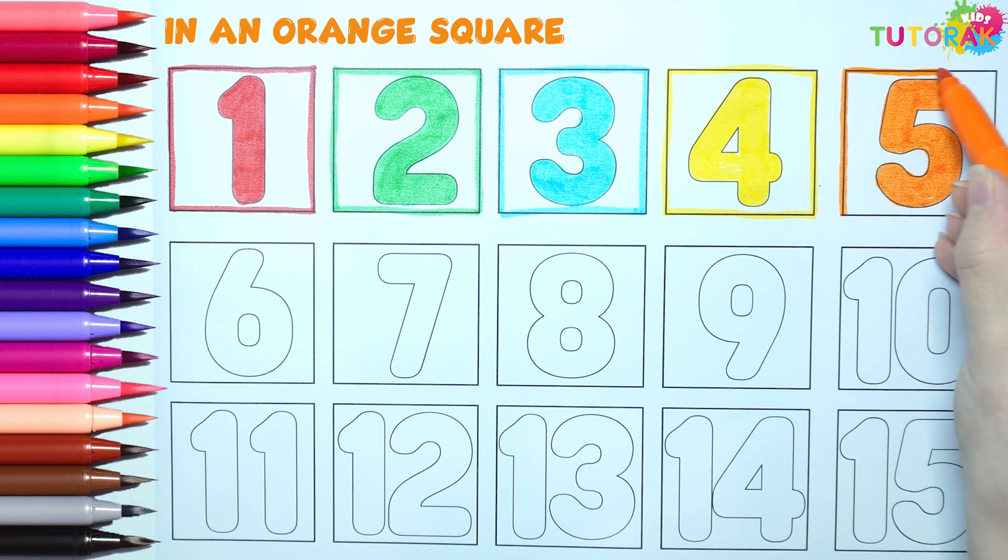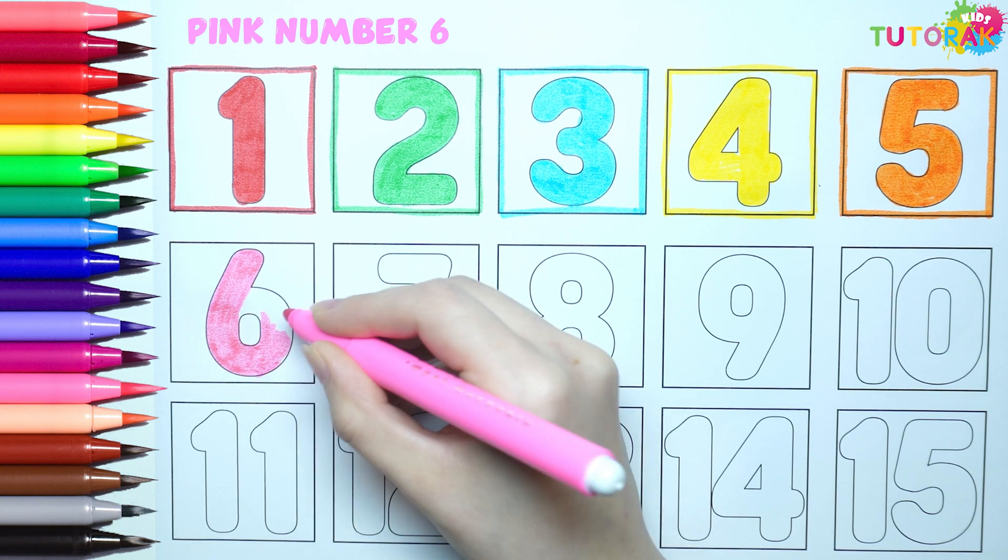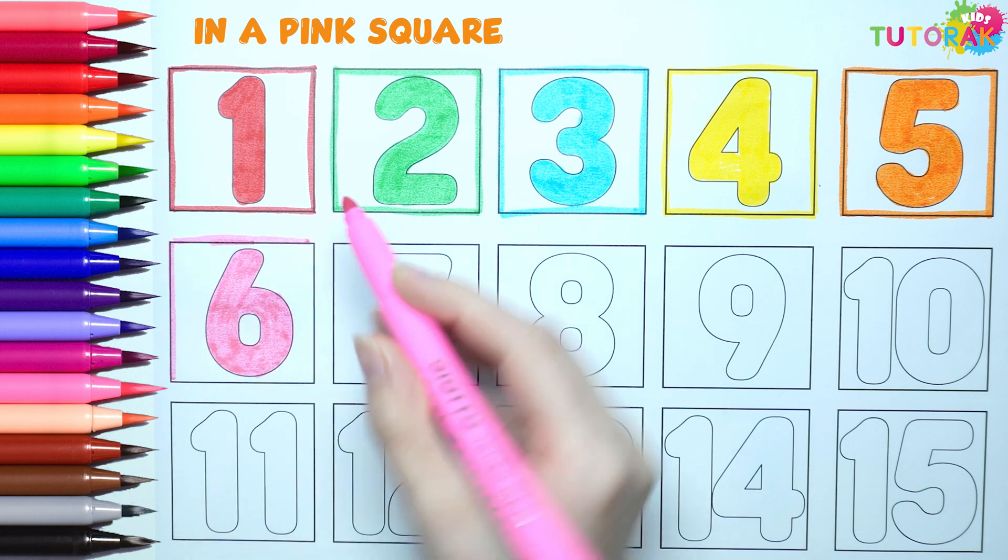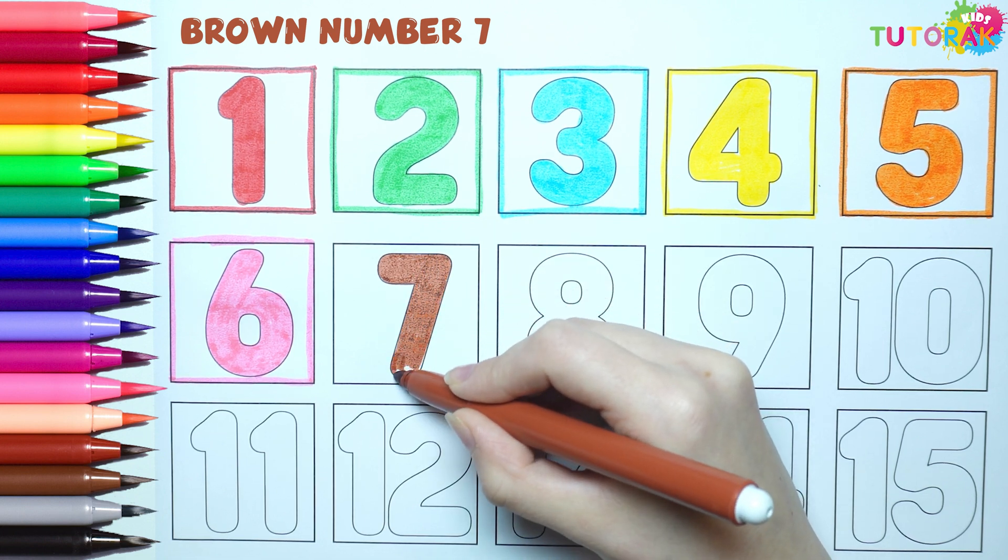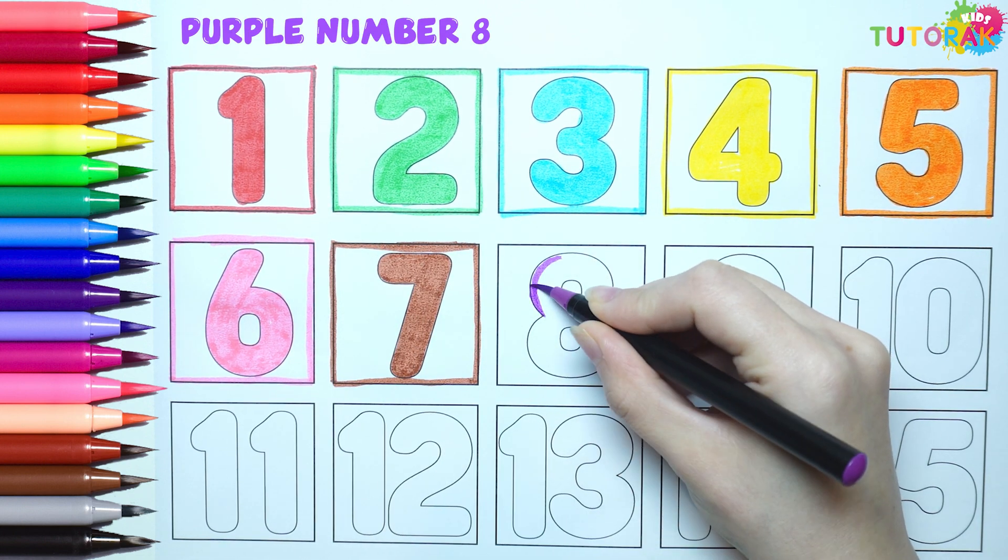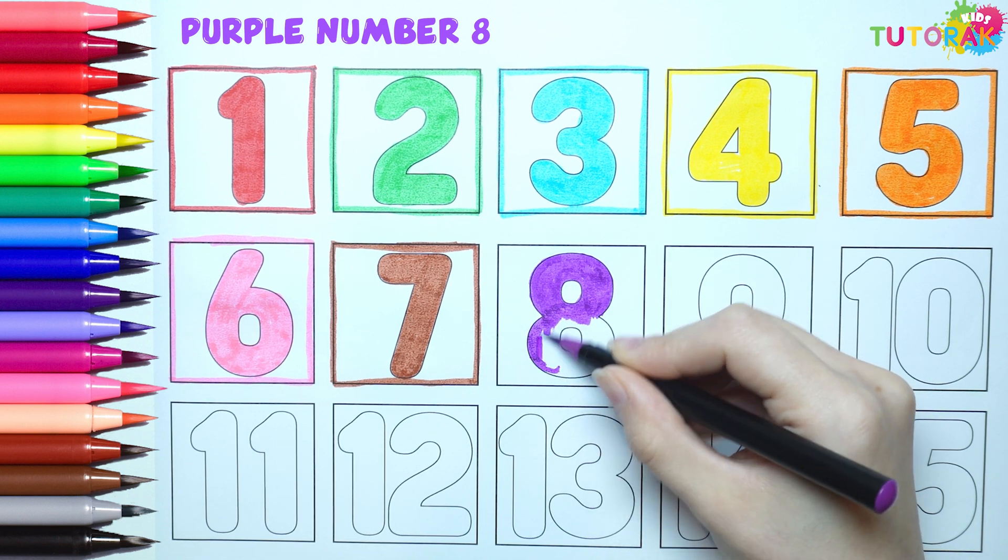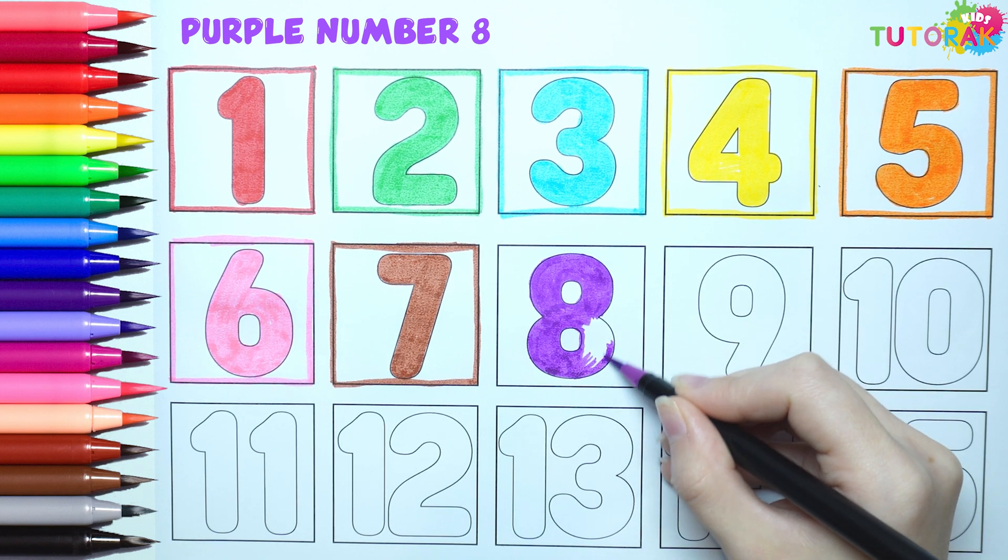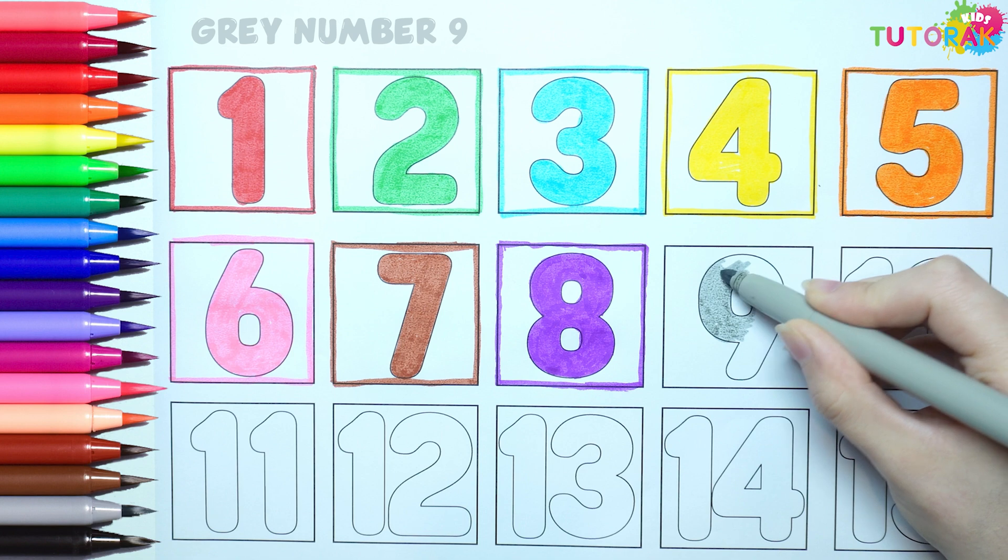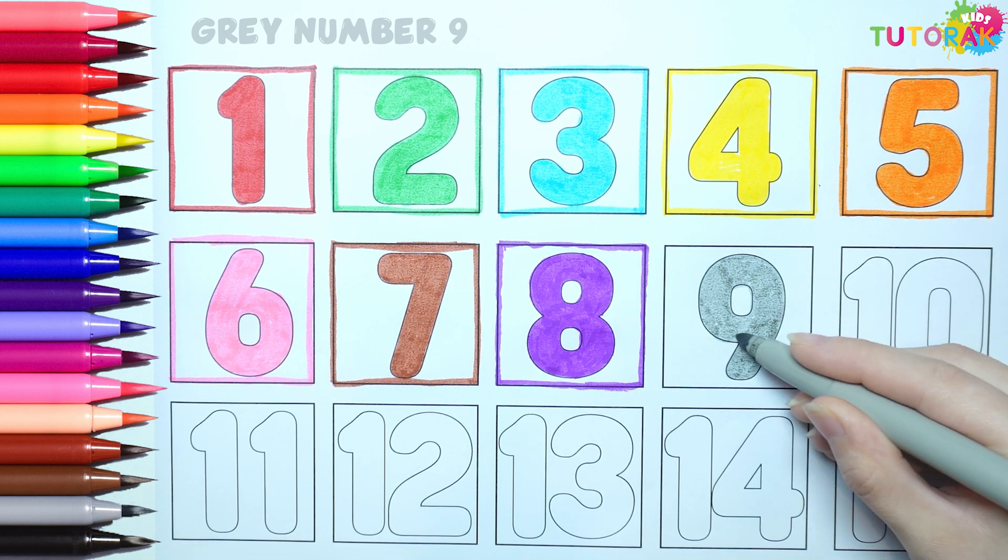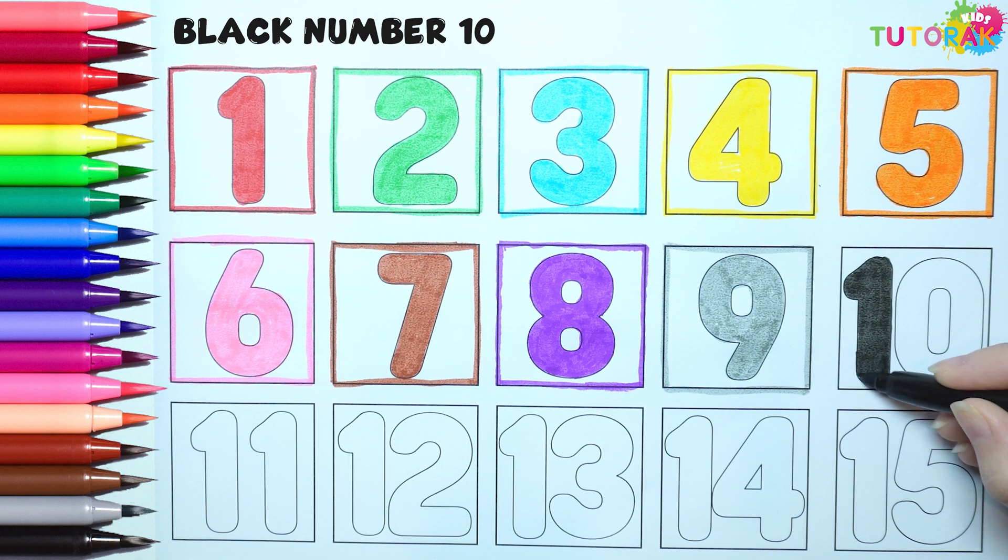in an orange square. We have pink number 6 in a pink square. This is brown number 7 in a brown square, and this is purple number 8 in a purple square. This is gray number 9 in a gray square. And this 1 and 0 make a 10, and that is color black. Black number 10